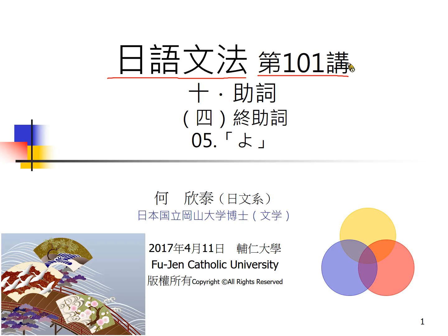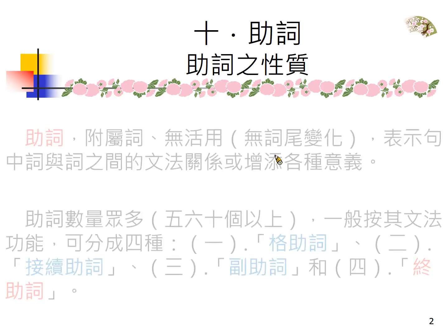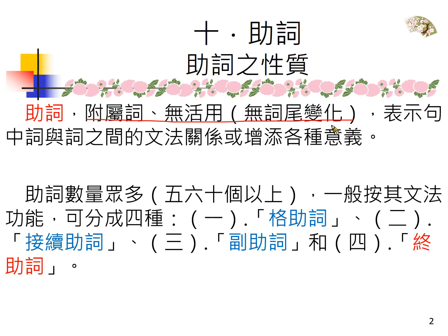第101讲，10大词类的最后一个词类，助词的最后一种，今天我们要讲的是よ。助词的性质：助词没有活用，没有词形变化。数量很多，五六十个以上，大概快要六七十个以上。一般的文法功能我们分成四种，就简单的学校文法或日语教育文法来说，简单分成四种：格助词、接续助词、副助词，还有放在句尾的终助词。